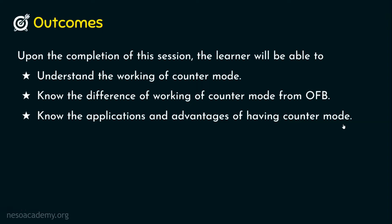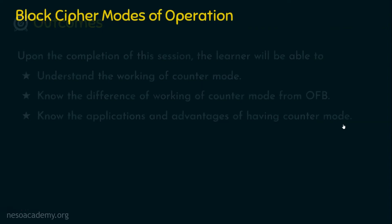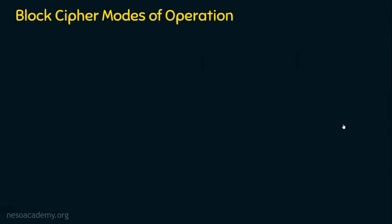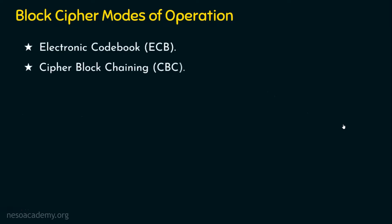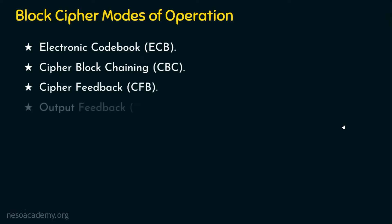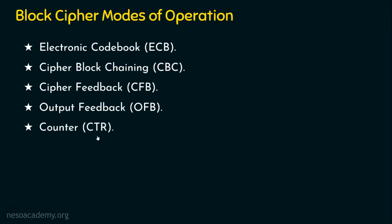There are basically five block cipher modes of operation. Number one, the electronic code book. Number two, the cipher block chaining, CBC. Number three, the cipher feedback mode, CFB. Number four, the output feedback mode, OFB. And number five, the last mode of operation is the counter mode.